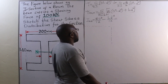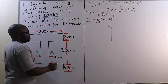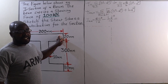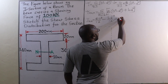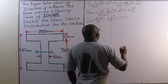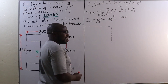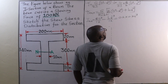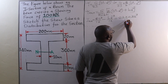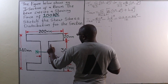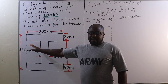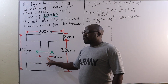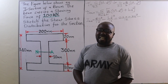The breadth is 200 millimeters, which converts to 0.2 meters. The total depth is 340 millimeters, converting to 0.34 meters. For the subtracted rectangles, the breadth is 200 minus 10 equals 190 millimeters, where 10 millimeters is the thickness of the web. In meters, that is 0.19 meters.